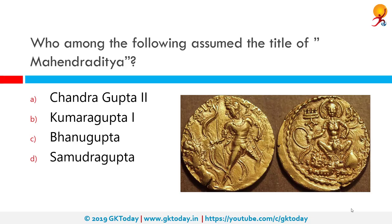Who among the following assumed the title of Mahendra Aditya? The correct answer is Kumara Gupta I. Kumara Gupta I, also known as Shakra Aditya or Mahendra Aditya, was an emperor of the Gupta period in 415–455 CE.